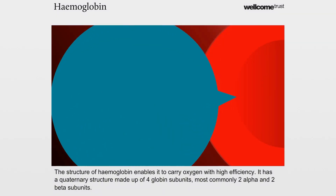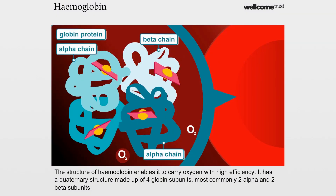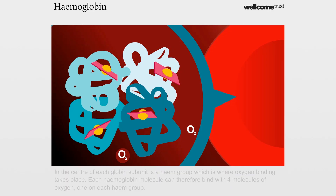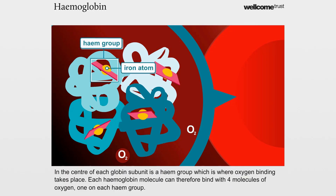The structure of haemoglobin enables it to carry oxygen with high efficiency. It has a quaternary structure made up of four globin subunits, most commonly two alpha and two beta subunits. In the centre of each globin subunit is a heme group, which is where oxygen binding takes place. Each haemoglobin molecule can therefore bind with four molecules of oxygen, one on each heme group.